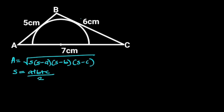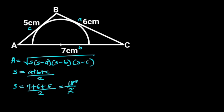To find S, S will be equal to 7 plus 6 plus 5, all divided by 2. 7 plus 6 plus 5 is 18, so we have 18 divided by 2, which is 9. Now we know the value of S.